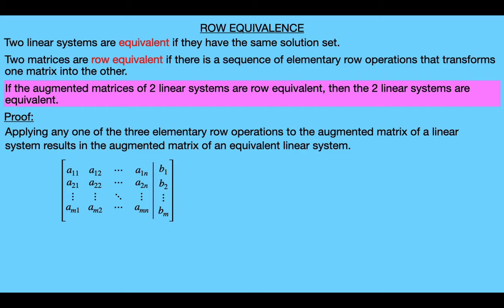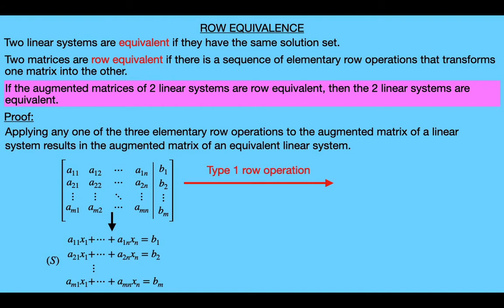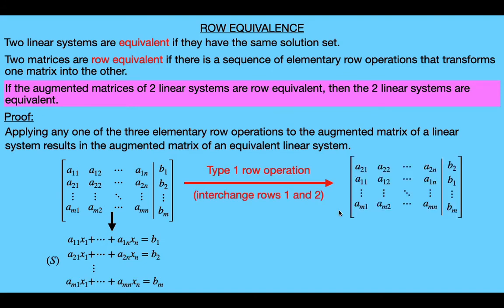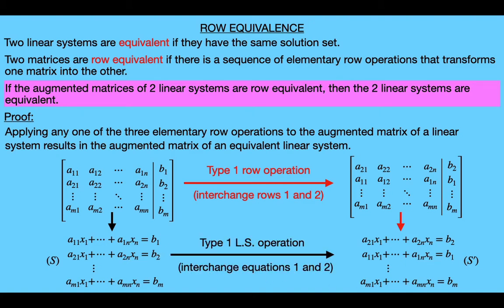Consider this augmented matrix representing an arbitrary linear system S. Applying a row operation of the first type — interchanging two rows — and without loss of generality, interchanging the first and second rows gives us a new augmented matrix representing a new linear system S prime. We can obtain S prime by interchanging the first and second equations of S. Since interchanging two equations was one of our three operations for linear systems that preserves the solution set, S and S prime must have the same solution set, so they are equivalent.